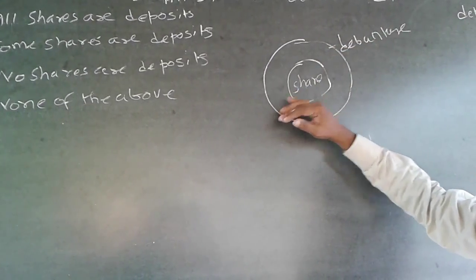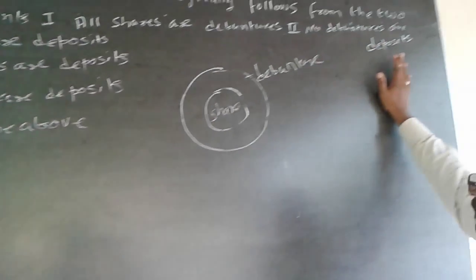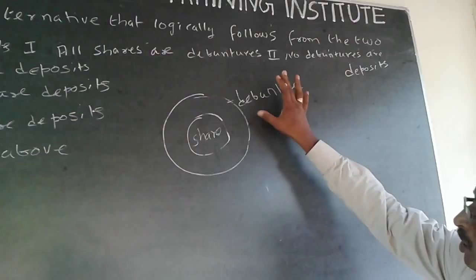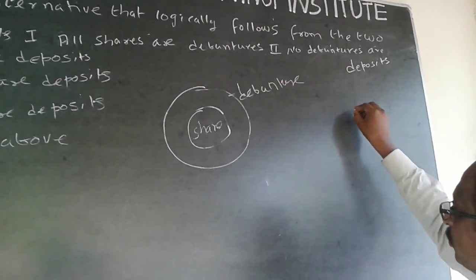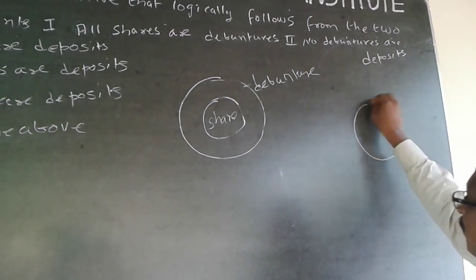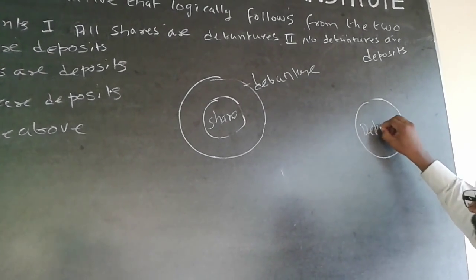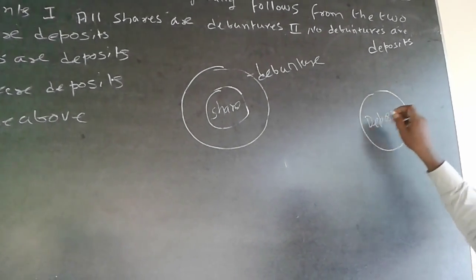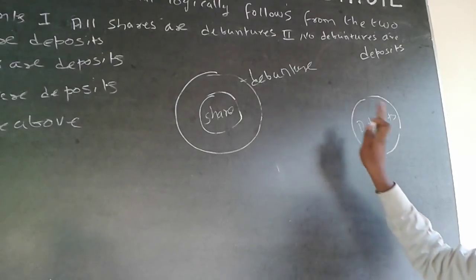Now the next statement is no debentures are deposits. So there will be no relationship with debenture and deposits. So there will be totally two distant places. These are all deposits. Because no debentures are deposits.